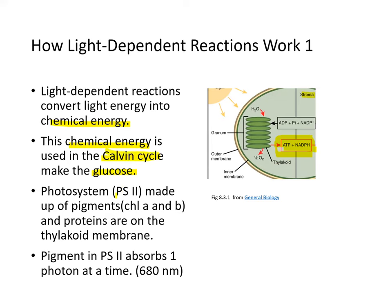Photosystem II is made up of pigments chlorophyll A and chlorophyll B, and the proteins are on the surface of the thylakoid membrane. Pigments in photosystem II absorb one photon at a time in the range of 680 nanometers.